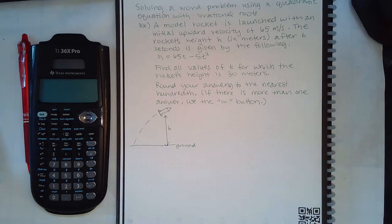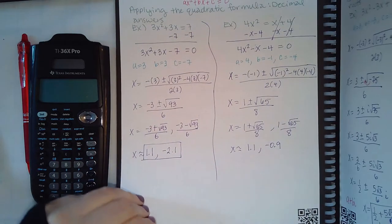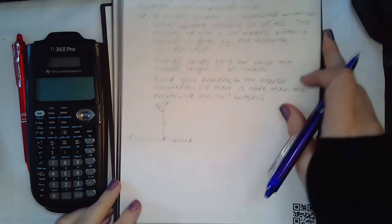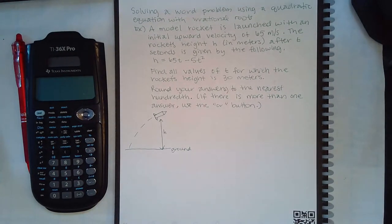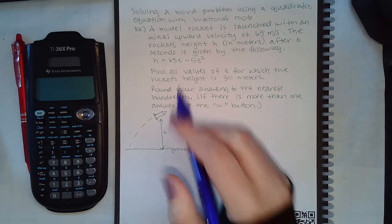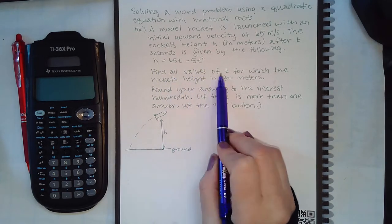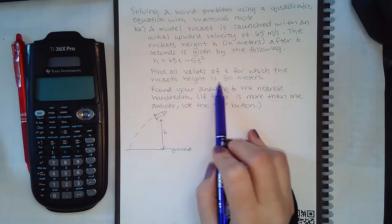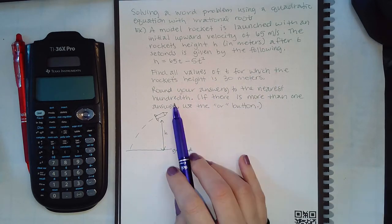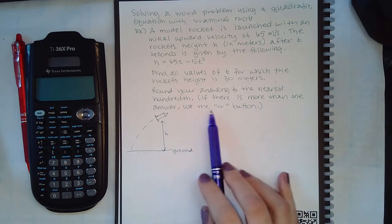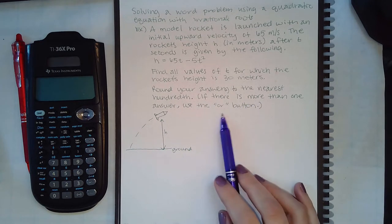Okay, we're going to continue with module 21, and here we're going to solve the first word problem of this module. The word problem reads: a model rocket is launched with an initial upward velocity of 65 meters per second. The rocket's height h in meters after t seconds is given by the following formula. Find all values of t for which the rocket's height is 30 meters. Round your answers to the nearest hundredth. If there is more than one answer, use the or button.